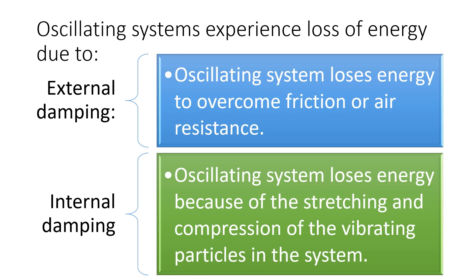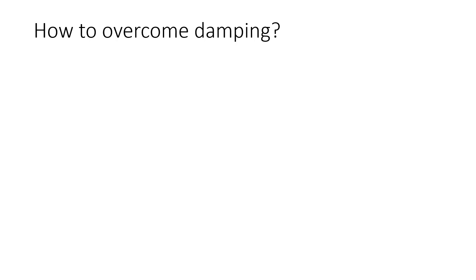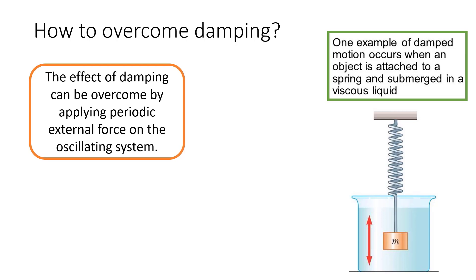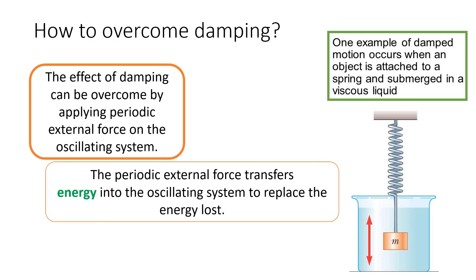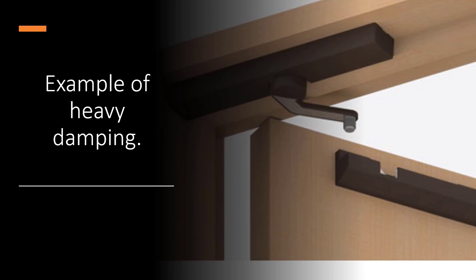Now, how to overcome damping? Can we overcome damping? Look at the example. One example of damped motion occurs when an object is attached to a spring and the spring is submerged in a viscous liquid. The effect of damping can be overcome by applying periodic external force on the oscillating system. The periodic external force transfers energy into the oscillating system to replace the energy lost. Hence, the system is set to be in a forced oscillation. This is how we overcome damping, and this is a diagram of an example of heavy damping.